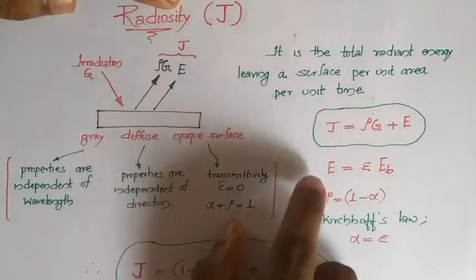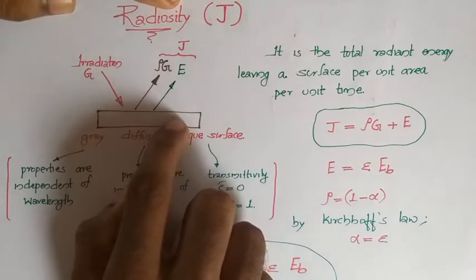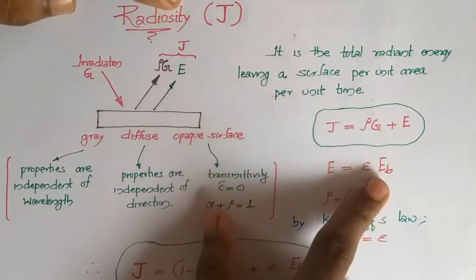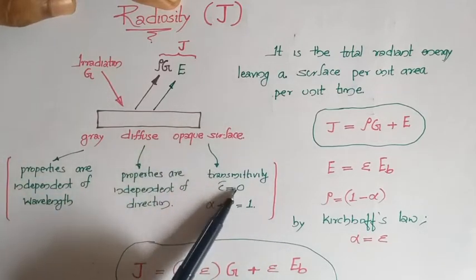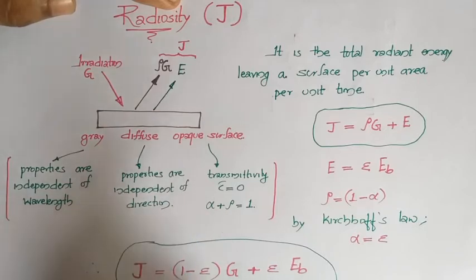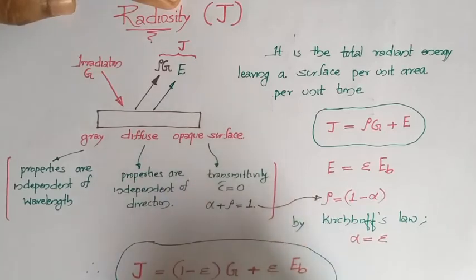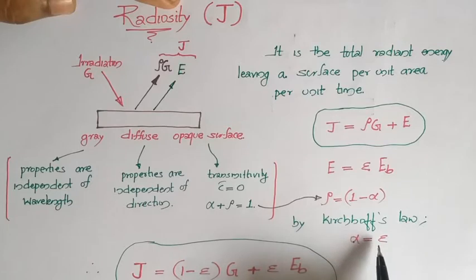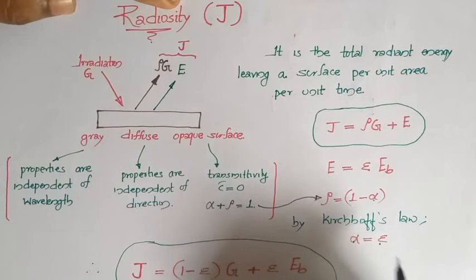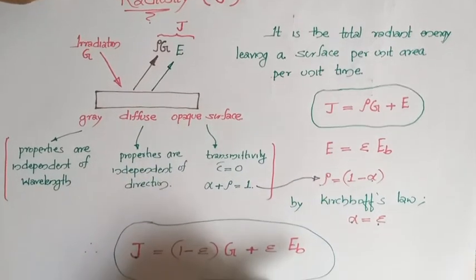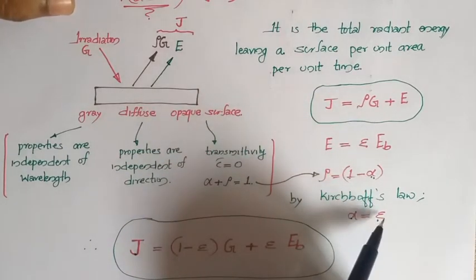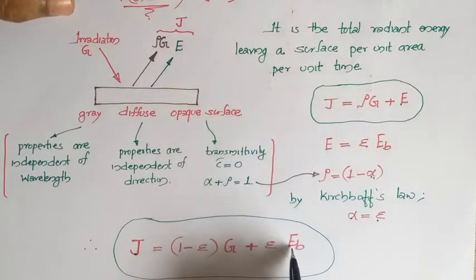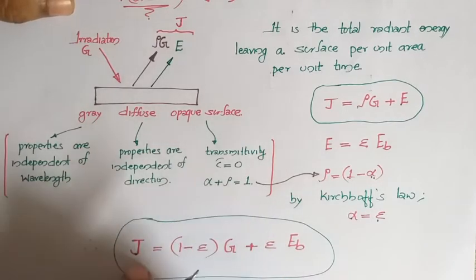For a body at the same temperature as a black body, the emissive power is E_b, and for a real body E equals emissivity epsilon times E_b. Since the surface is opaque, tau equals zero, so absorptivity plus reflectivity equals one, giving reflectivity rho equal to 1 minus alpha. By Kirchhoff's law, absorptivity alpha equals emissivity epsilon. Substituting, radiosity J equals (1 minus epsilon) times G plus epsilon times E_b.